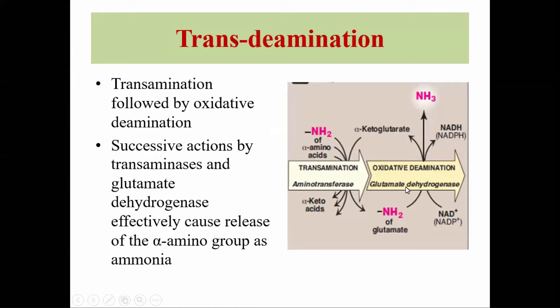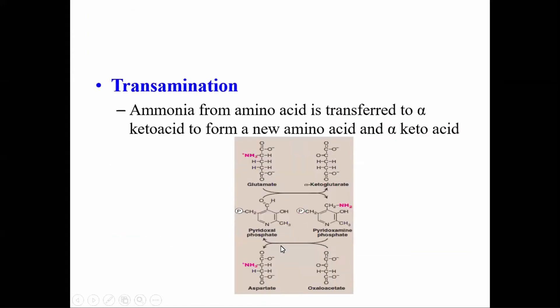Oxidative deamination is done by glutamate dehydrogenase. Transamination is the type of reaction in which the amino group is removed from one amino acid to form the respective alpha-keto acid, but the amino group released from that amino acid is not in the free form of ammonia — instead it is transferred to another keto acid to form a new amino acid.